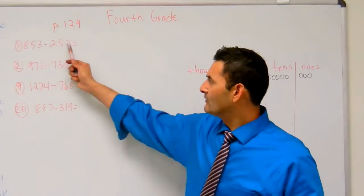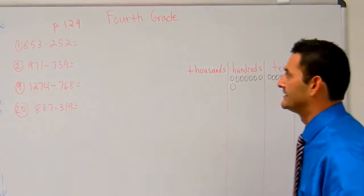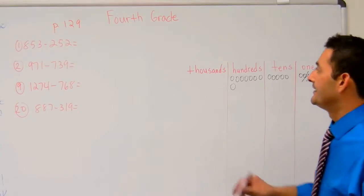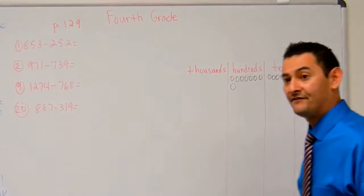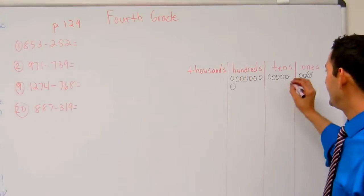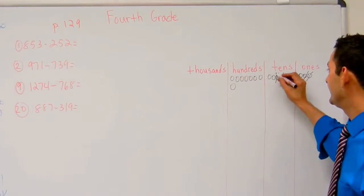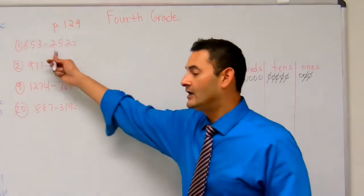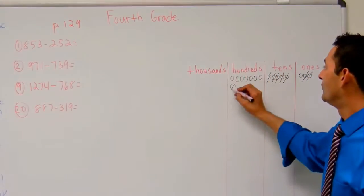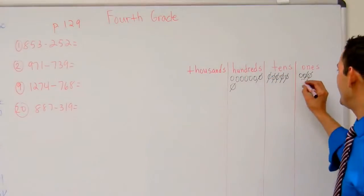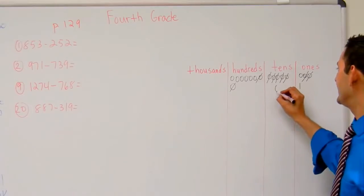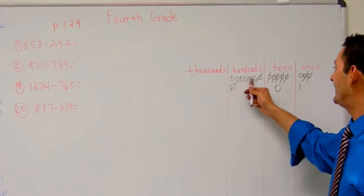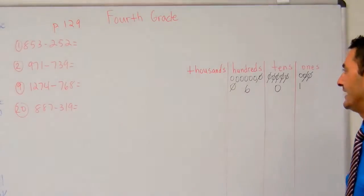Let's start with the ones place. I've got two ones that I'm going to take away. Then I've got five tens that I'm going to take away — two, three, four, five. And then I've got two hundreds that I'm going to take away — one, two. So here I've got one left, there I've got zero left, and here I've got six left.